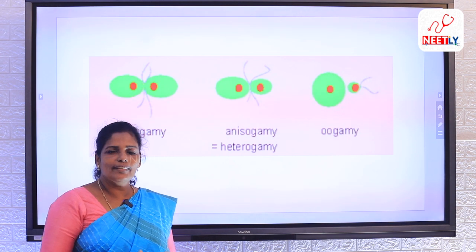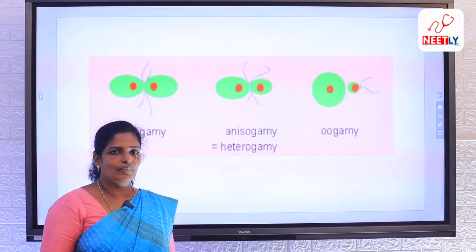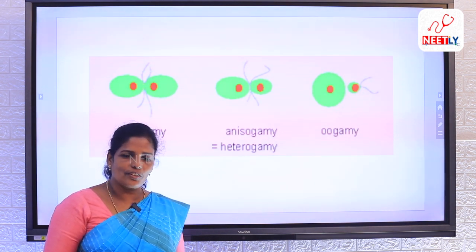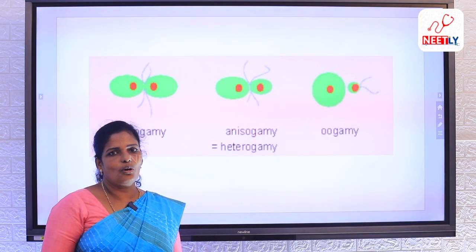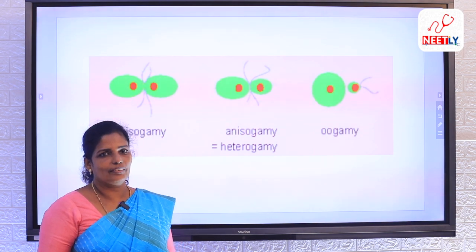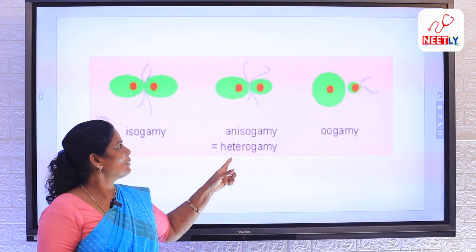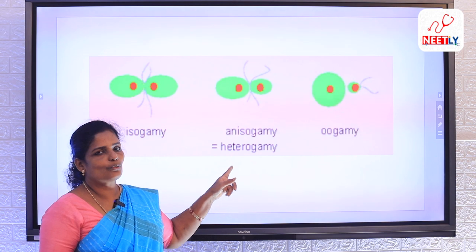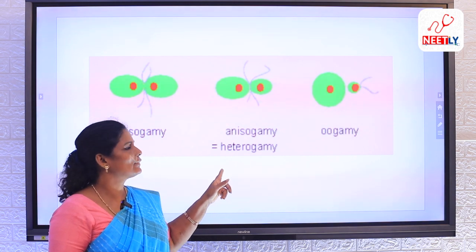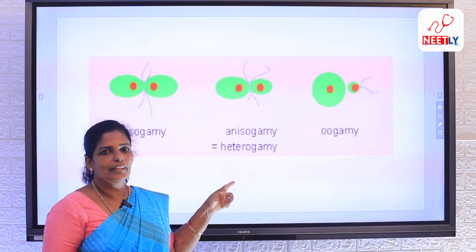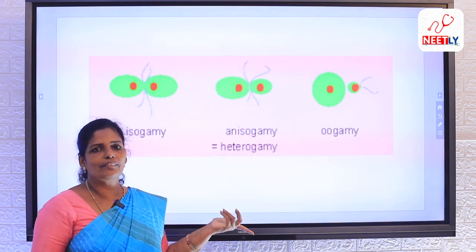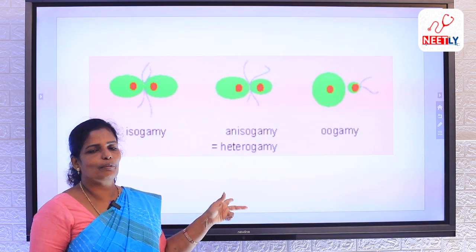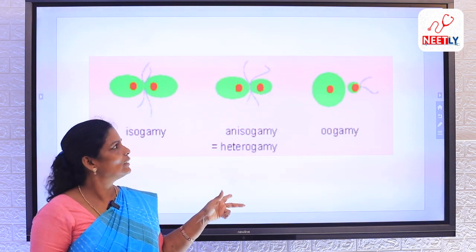Either they differ in their structure or function. Such type of fusion is called anisogamete. It is also known as heterogamete — 'hetero' means different. Both the gametes differ from each other.